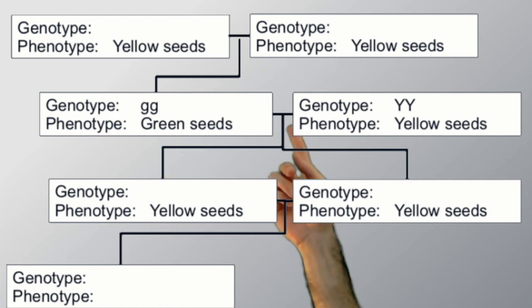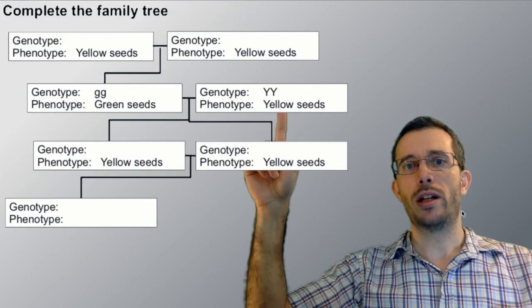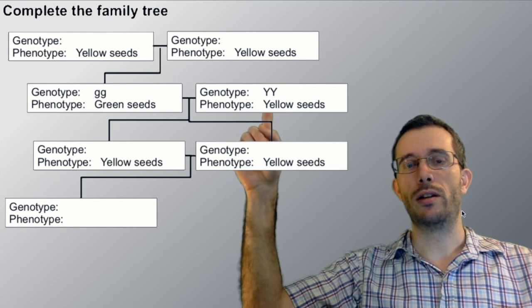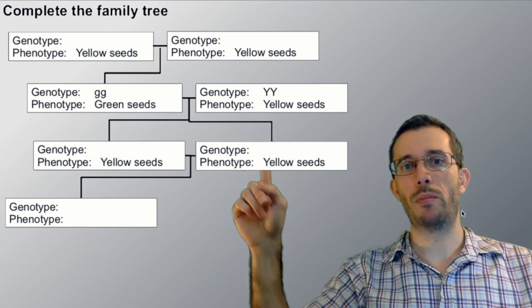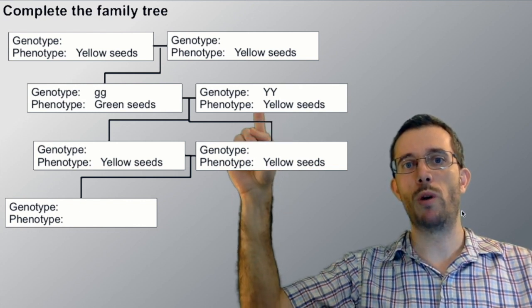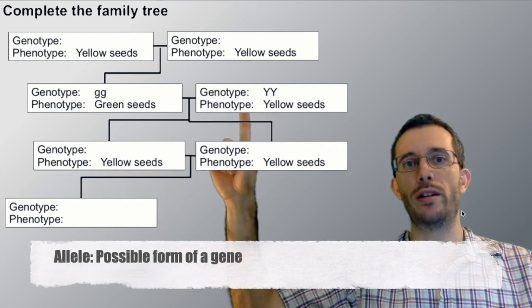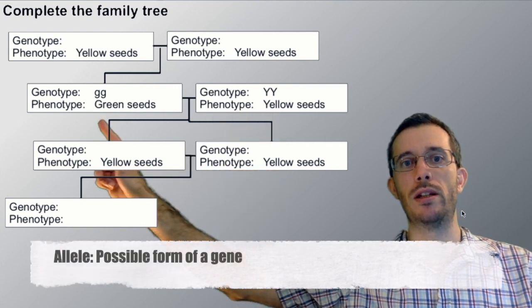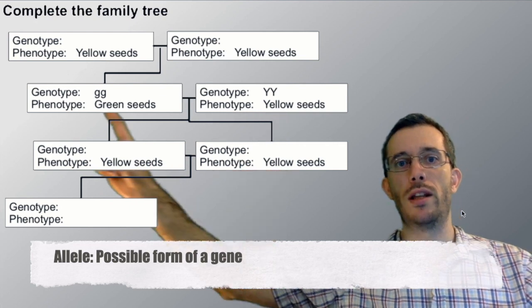Then if you look at their children, you see both of their children have yellow seeds. Now given that we know that the genotype of the children is made from one of the alleles of each parent, we know the only possibilities here is yellow and green.